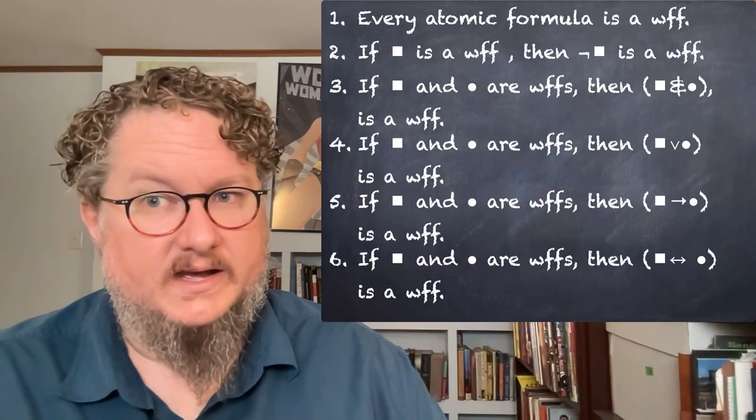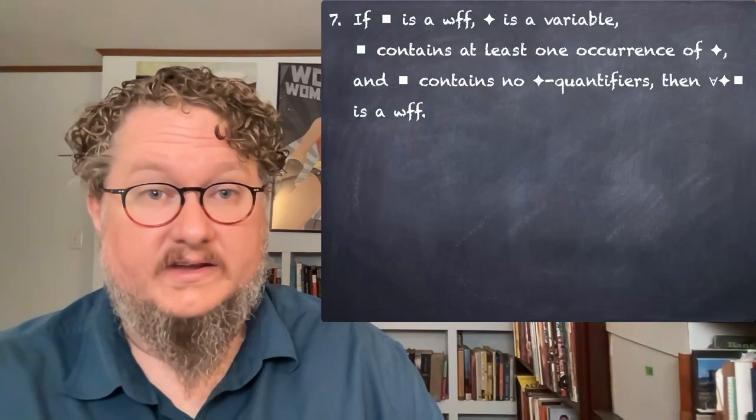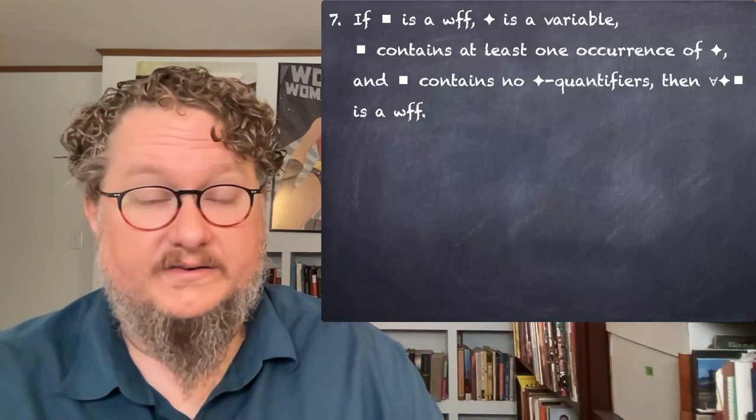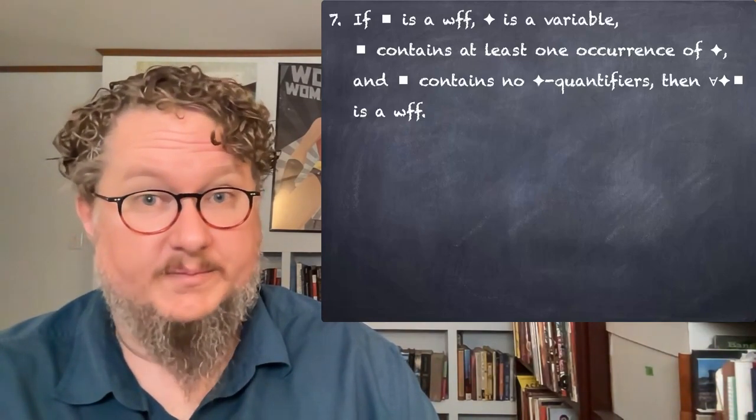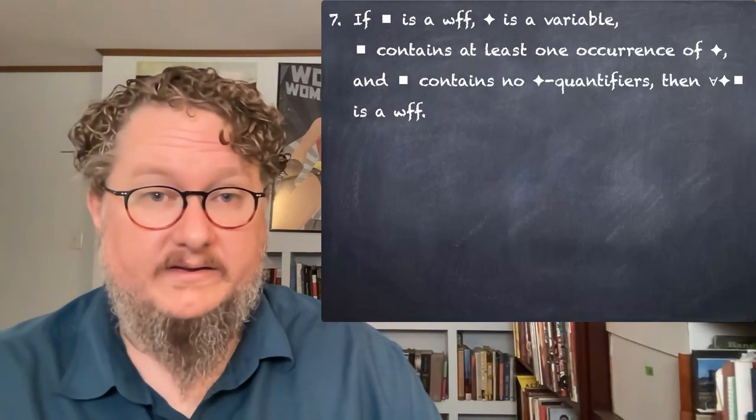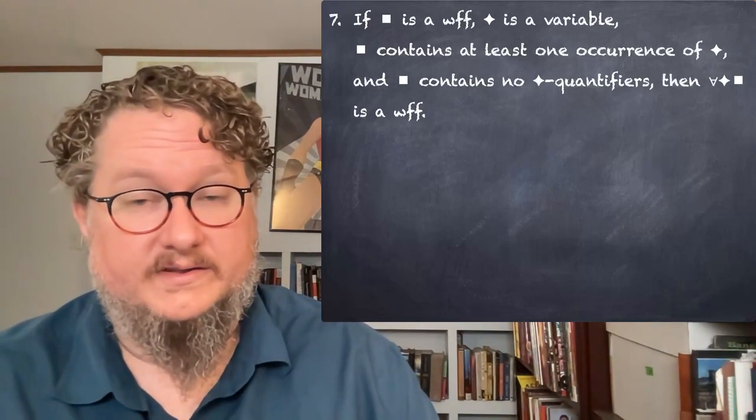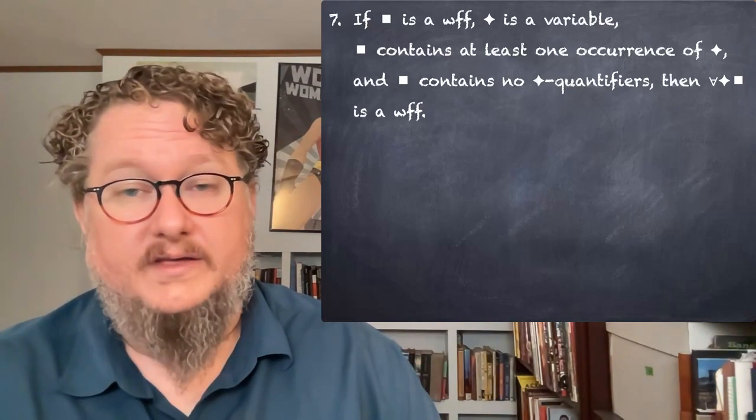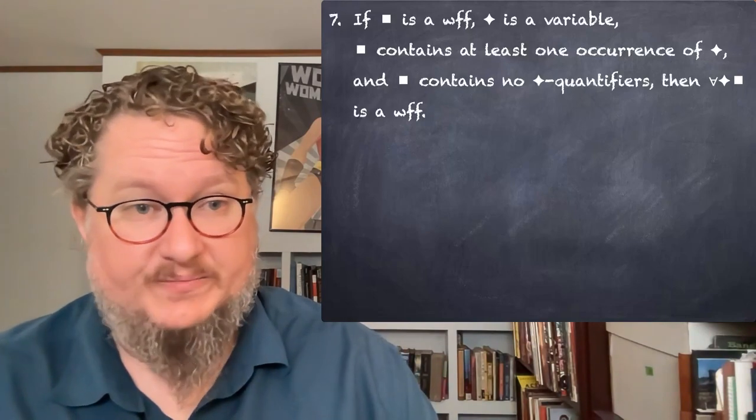And then we have new rules for our quantifiers. They're a little complicated, so I'll walk you through them slowly. Rule seven says if square is a wff and diamond is a variable, and square contains at least one occurrence of that variable diamond, and square contains no diamond quantifiers, no quantifiers that quantify over that variable.